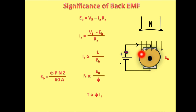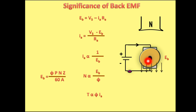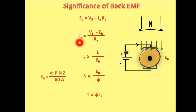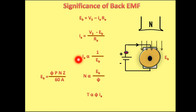If we apply KVL in this loop, we get the equation: Eb = Vs − Ia·Ra, where Vs is the supply voltage and Ia·Ra is the voltage drop across the armature resistance. From this equation we get: Ia = (Vs − Eb) / Ra. This means Ia is inversely proportional to Eb.